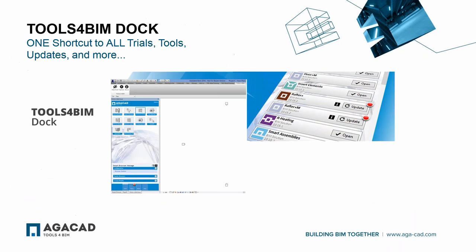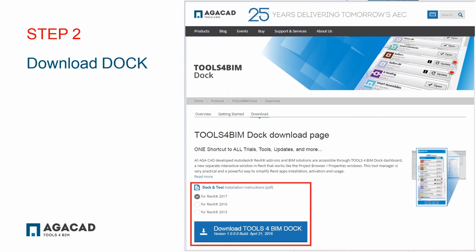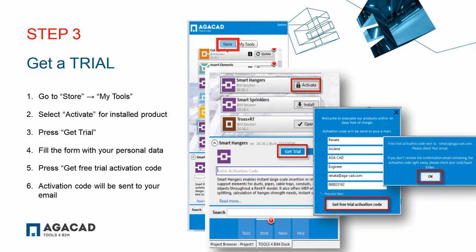If you would like to test Wood Framing Wall Plus or Wood Framing Floor Plus, you are welcome to download our Tools for Revit Dock — a manager for downloading, activating products, and getting the latest updates — from our webpage. Choose the version you want, download it, fill out the trial form, and you will get an activation code valid for two weeks. Regarding the CNC export, we provide it as a separate installation — if you're interested, write us a message or email and we will provide you with an installation to test and see how it works.